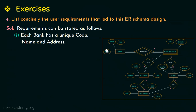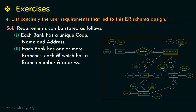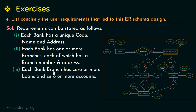The requirements are as follows. First: each bank has a unique code, name, and address. Second: each bank has one or more branches, each of which has a branch number and address. Third: each bank branch has zero or more loans and zero or more accounts — that is, each bank branch may or may not have loans and may or may not have accounts.